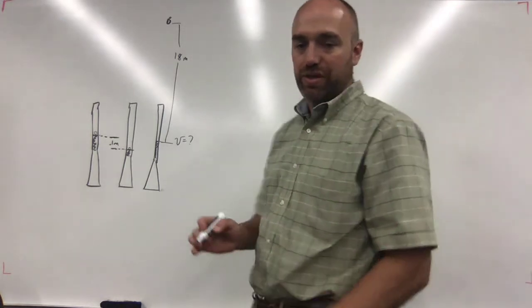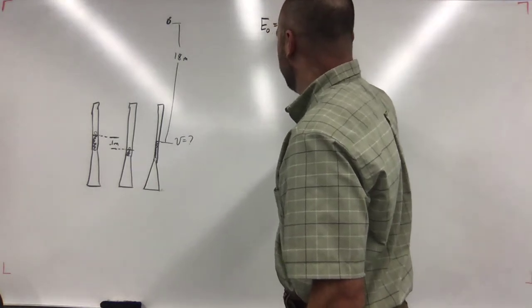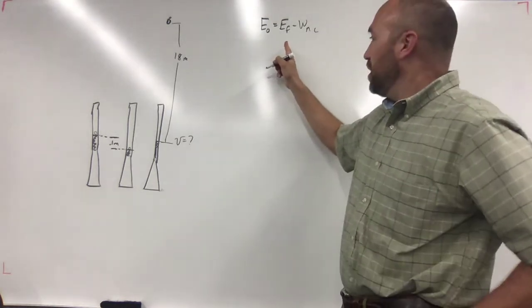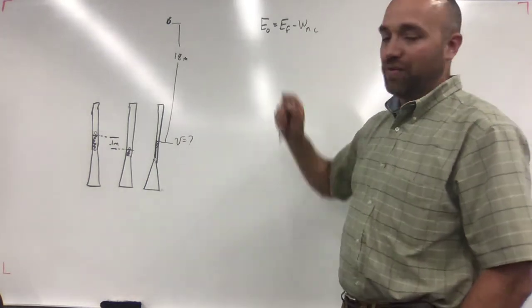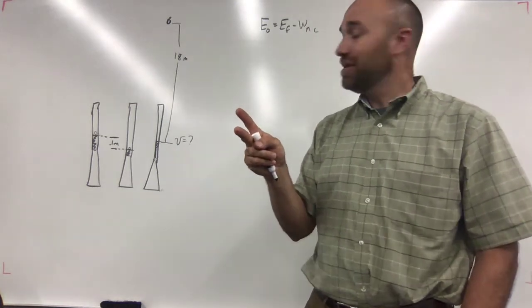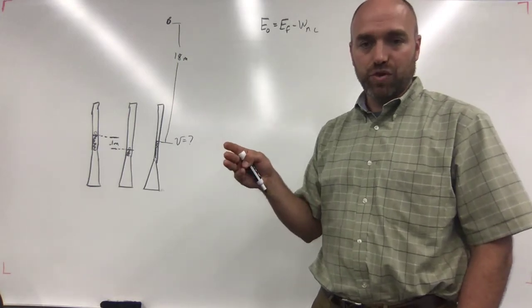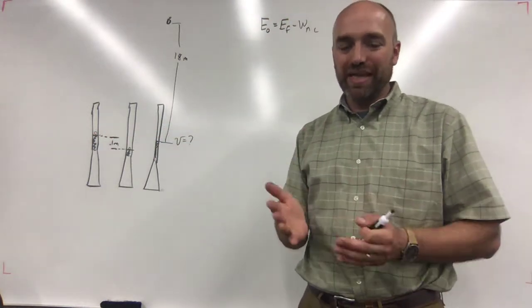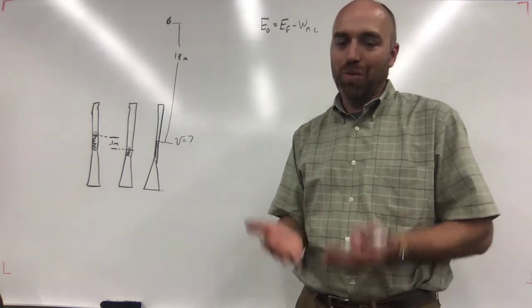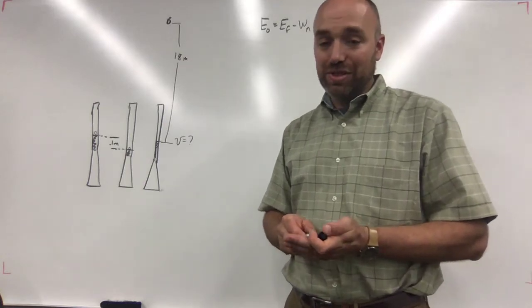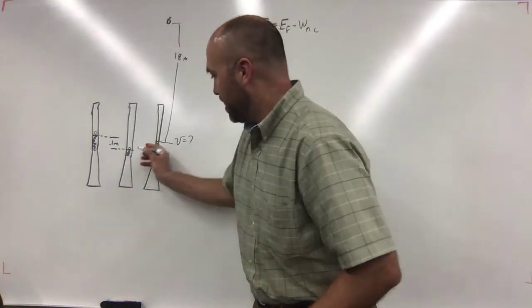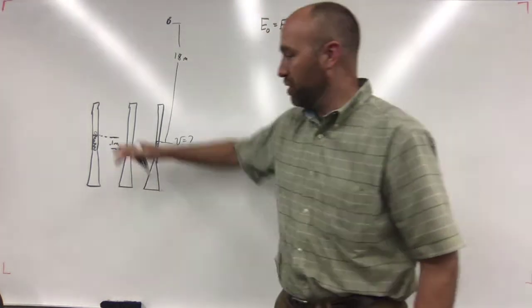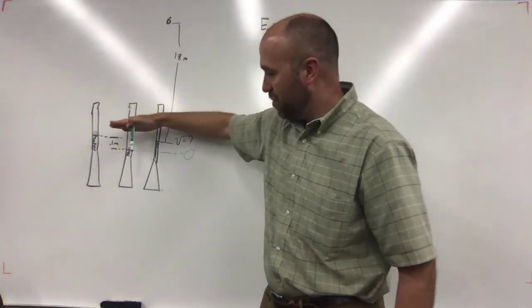All these problems start out the same way: the work-energy theorem. Energy initial equals energy final minus work not conserved. So you have to define two things: where's initial, where's final, and where's the bottom — where's zero? The problem labels zero up here, but in general the best place to put the bottom is at the bottom. I would suggest you redraw the problem with zero at the lowest point.